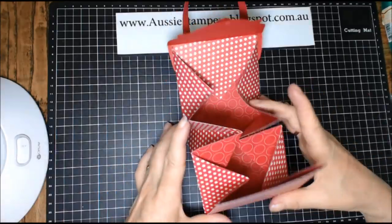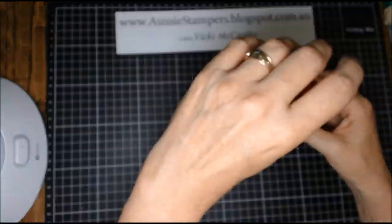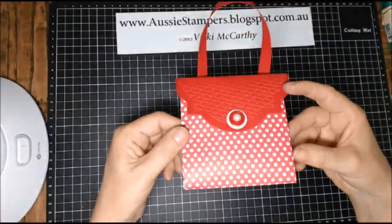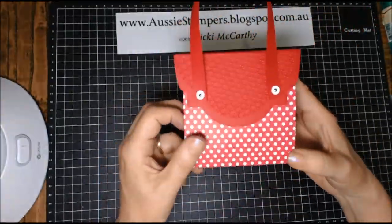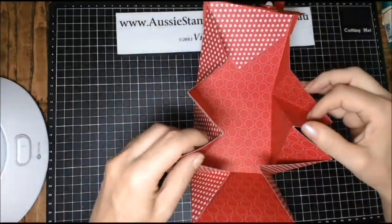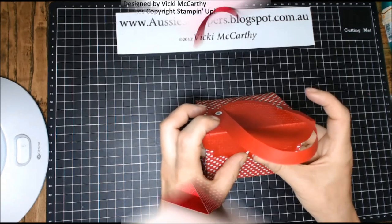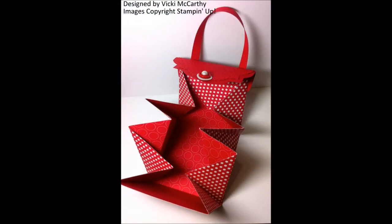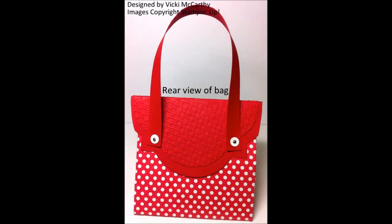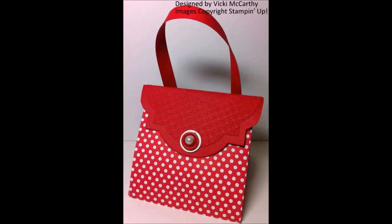Now the best way to close this up is with a velcro dot. I'm just using a glue dot for the purpose of the video, but a velcro dot works much better for this because you can open and shut it very many times. If you don't have velcro, a glue dot is fine, but I recommend the velcro as a better alternative. And there's your bag done. There it is open. There's the back of the bag. So there is one bright and beautiful little box in the shape of a handbag or purse.